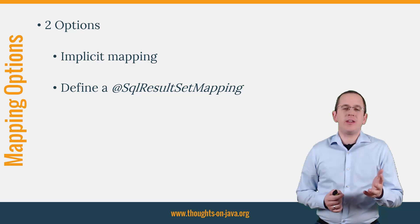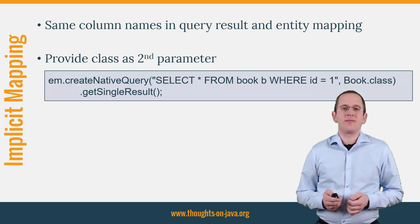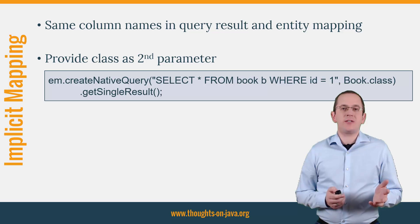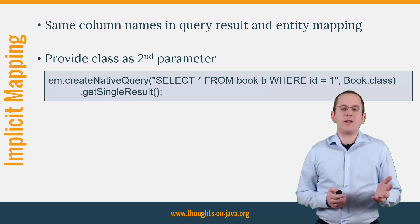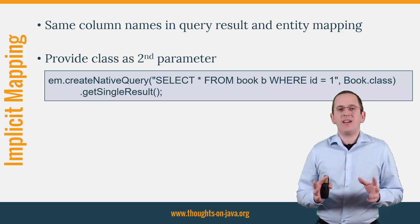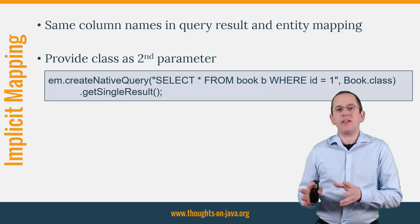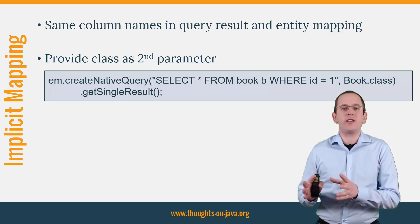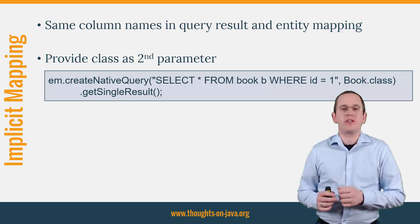Let's have a look at the implicit mapping first. You don't need to provide any additional mapping information if your query result uses the same column names as your entity mapping. In this case, you just have to provide the entity class as the second parameter to the CreateNativeQuery method.